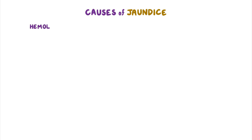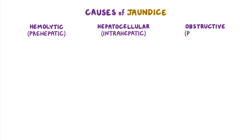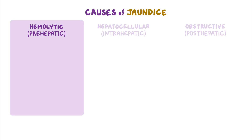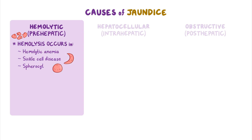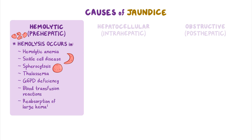The causes of jaundice can be classified as hemolytic or prehepatic, hepatocellular or intrahepatic, and obstructive or posthepatic. Hemolytic jaundice is caused by hemolysis, or breakdown of red blood cells, which occurs in conditions like hemolytic anemia, sickle cell disease, spherocytosis, thalassemia, G6PD deficiency, or blood transfusion reactions, as well as with reabsorption of large hematomas.